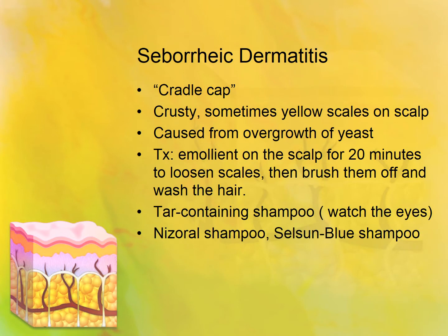Seborrheic dermatitis, also known as cradle cap. You see this in babies, usually sometime within their first year of life. They get crusty yellow scales on their scalp. Sometimes it can also be caused by an overgrowth of yeast. Treatment includes Nizoral shampoo or Selsun Blue. You can brush olive oil on the scalp first with a little scrub brush to help loosen the scales. If you use any tar-containing shampoo, make sure it doesn't run into the baby's eyes because it will burn and sting.